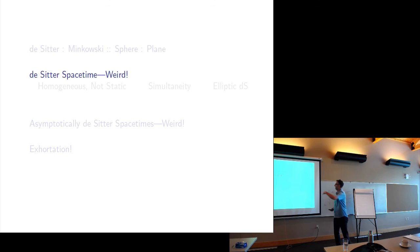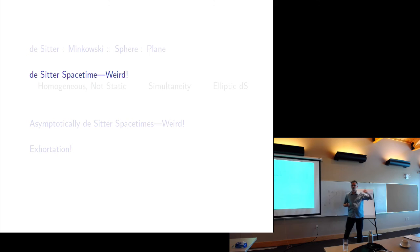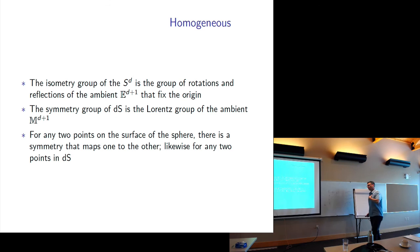Now, some weirdnesses of de Sitter spacetime. We'll talk about de Sitter spacetime, how weird it is, and then asymptotically de Sitter spacetimes — things that aren't de Sitter but become like it in the future, which is basically everything when you're talking about positive lambda in general. The first weirdness: it's homogeneous but not static. This is the huge difference from Minkowski spacetime — time is harder to think about in the de Sitter case.